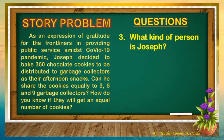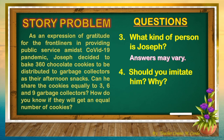Question 3: What kind of person is Joseph? Your answer may vary. One possible answer is that Joseph is a kind person. Next question: Should you imitate him, and why? Here there is no right or wrong answer. For me, yes — I want to repay all the sacrifices of the frontliners.